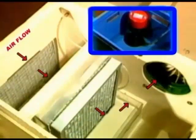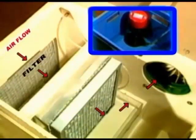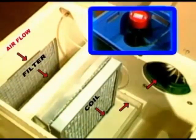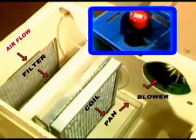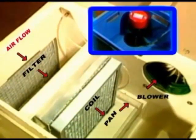Just as in a real air conditioner, air is drawn through the filter, the cooling coil, across the drain pan, and into the blower. For this demonstration, the blower airflow is set to create a partial vacuum in the drain pan compartment, which is typical of air conditioners.